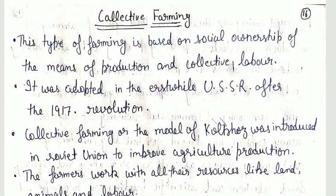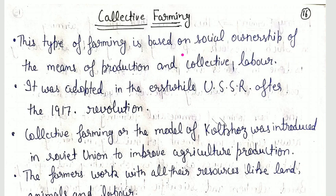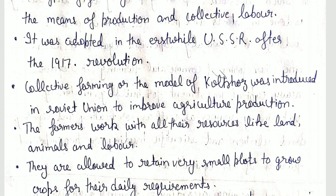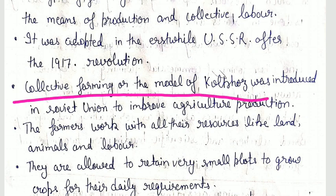The second type of farming is collective farming, which is based on social ownership of the means of production and collective labor. It was adopted first in the USSR after the 1917 revolution. The model of Kolkhoz was introduced in the Soviet Union to improve agricultural production.